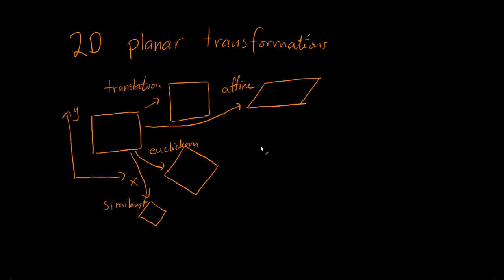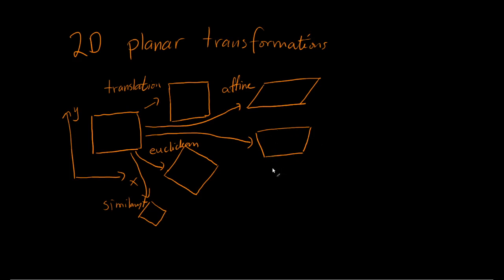And the final one is a perspective transformation. We talked about this earlier, when we should try to map an image from a UAV taken at an angle towards the ground — not directly towards the ground. The area covered on the ground by the camera will actually take this shape, and this is a perspective transformation.